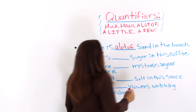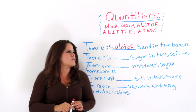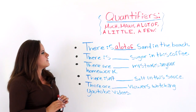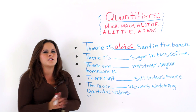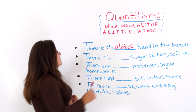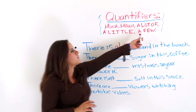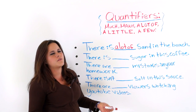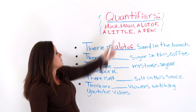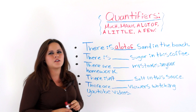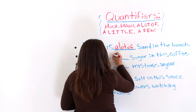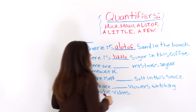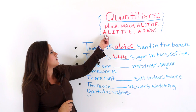There's a lot of sand in the beach. The next one says: there is blank sugar in this coffee. Which one are we going to use? Is sugar countable or uncountable? Uncountable, right? You could say there is a little sugar — not a few, because few is for countable nouns. There is a little sugar in this coffee, or you could use much or a lot of sugar in this coffee. But we're going to use little — there's little sugar in this coffee. Instead of 'a little,' you can say 'little' too.